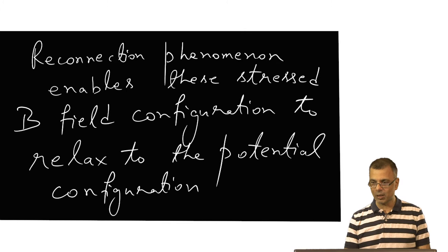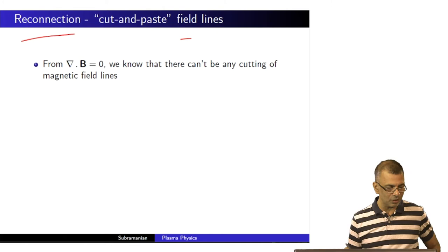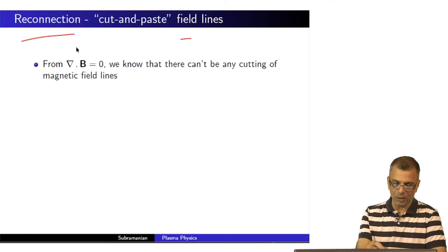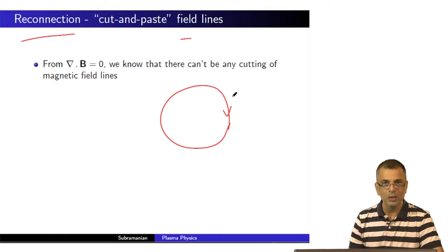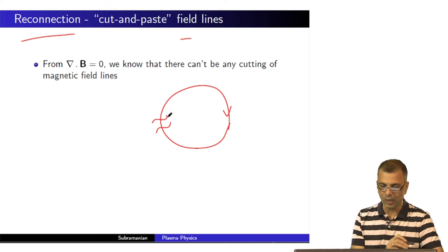Let us now turn our attention to consider what reconnection really is. From the divergence of B equals zero, which is sacrosanct — you cannot violate that — this essentially says that magnetic fields are always closed loops. You cannot cut lines like this; they are always closed loops. But reconnection — the whole point of reconnection is there is cutting and pasting. If there are two magnetic field lines that approach like this, they each close back somewhere far away.